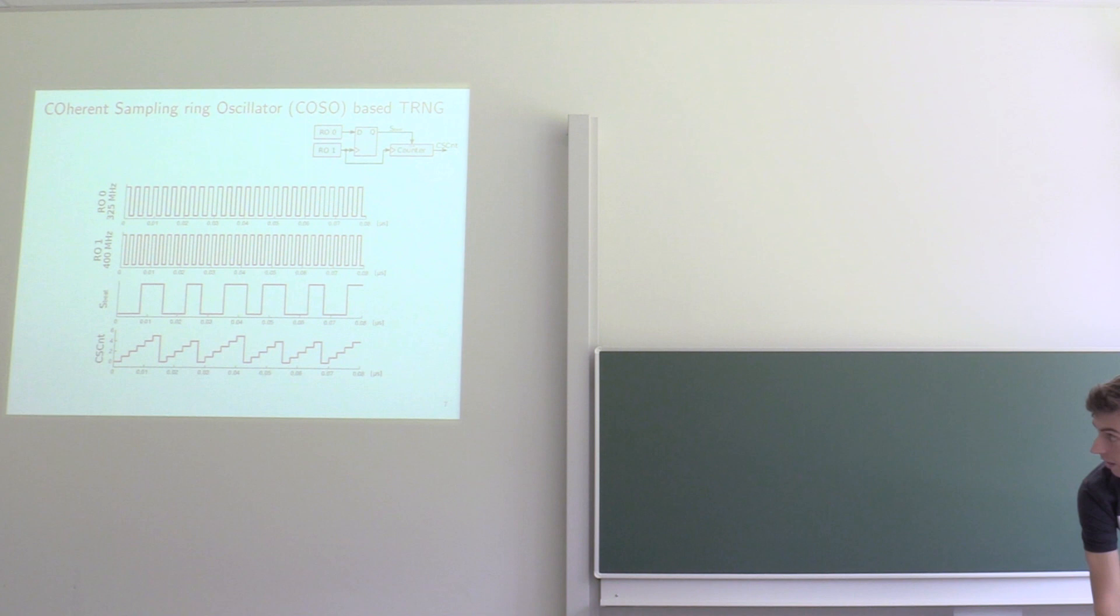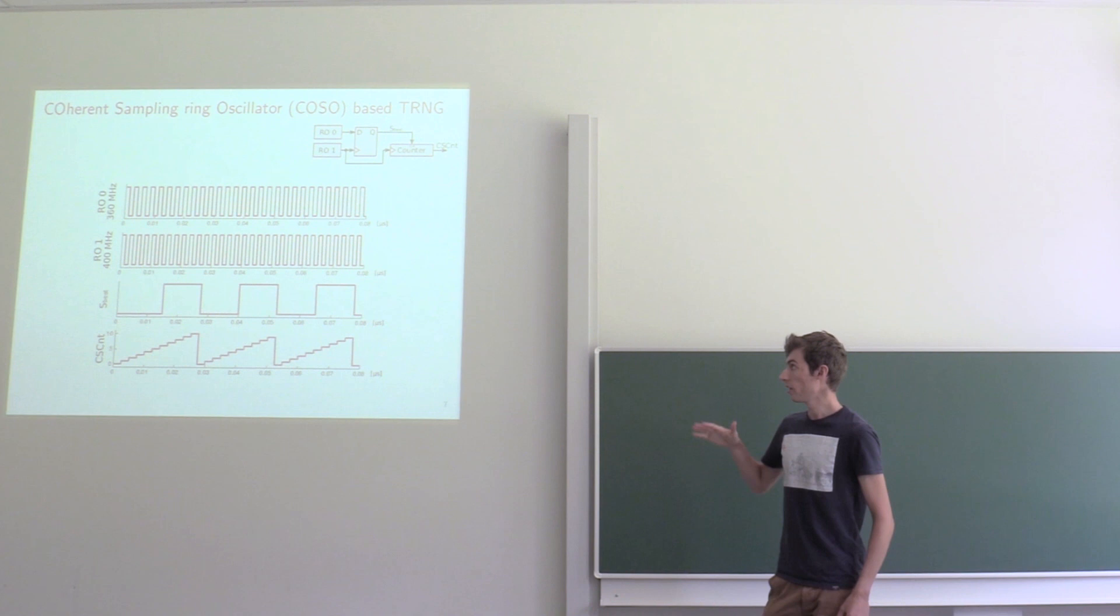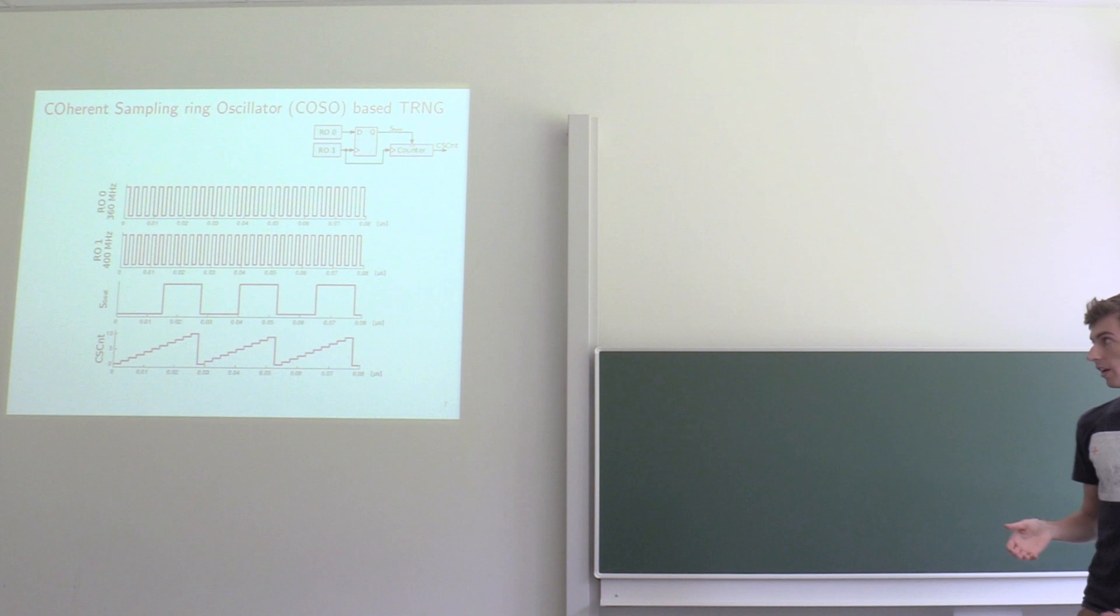So we can keep increasing it. But we have to keep in mind that only one bit can be extracted every period of your beat signal. And so your throughput will decrease by matching this first ring oscillator to the second one. So it will be a trade-off between generated entropy and throughput.